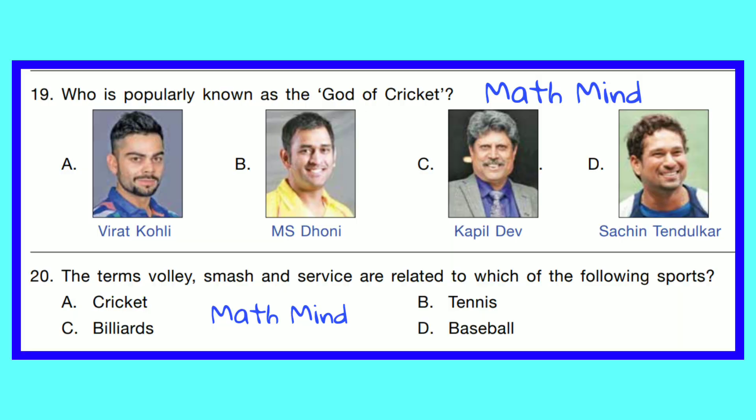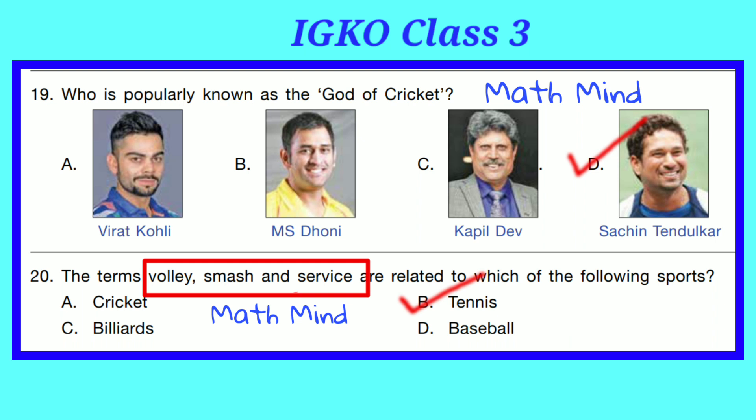Question No. 19. Who is popularly known as the god of cricket? Option D is correct — Sachin Tendulkar. Question No. 20. The terms volley, smash, and service are related to which sport? These terms are used in tennis, so Option B is correct. A volley in tennis is a shot in which the ball is struck before it bounces on the ground. A smash is one of the most powerful strokes in tennis, hit above the hitter's head before the ball bounces.